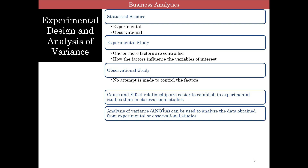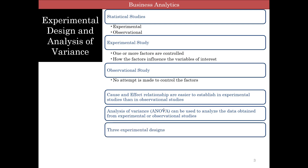We are going to look at something called Analysis of Variance, or ANOVA, and essentially we are analyzing the variance. Variance is the spread — it's the square of standard deviation, the average squared distance from the mean, while standard deviation was the average distance from the mean. We are going to use ANOVA to analyze data obtained from either experimental or observational studies. There are three basic experimental designs: a completely randomized design, which we will talk about in this lecture; randomized block design; and factorial experiments, which we will talk about later when we look at two-factor ANOVA.